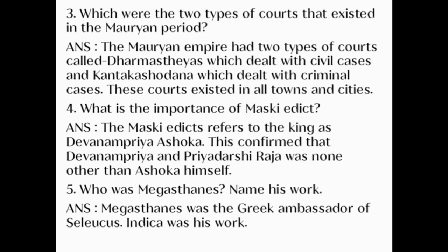Question number 3: Which were the two types of courts that existed in the Mauryan period? Answer: The Mauryan empire had two types of courts — Dharmasthaya, which dealt with civil cases (disputes between two people or parties), and Kantakashodhana, which dealt with criminal cases. These courts existed in all towns and cities.